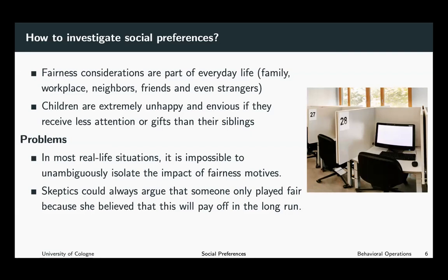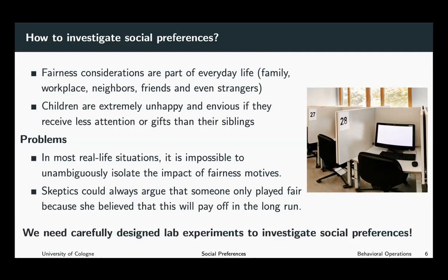Maybe I do you a favor because I anticipate that you will repay me. So it's important for really investigating fairness preferences to create a controlled environment in which we can rule out all these other explanations. One way to do this is by conducting controlled laboratory experiments, where you can control for repeated interaction and rule out long-term considerations as a possible explanation. On the right-hand side of the screen, you see a picture of the Cologne lab, where several studies were conducted, and controlled laboratory experiments can really help us to better understand social preferences.